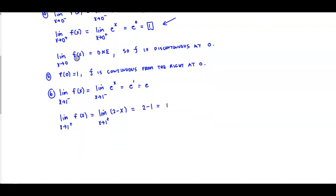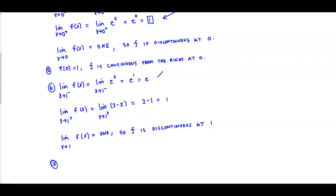Since the left and right limits are not equal to each other, the limit as x approaches 1 of the function does not exist. So f is also discontinuous at 1. However, f of 1 equals e, so f is continuous from the left at 1.